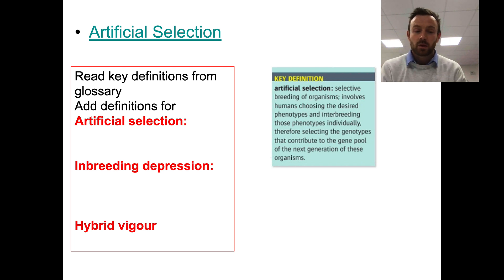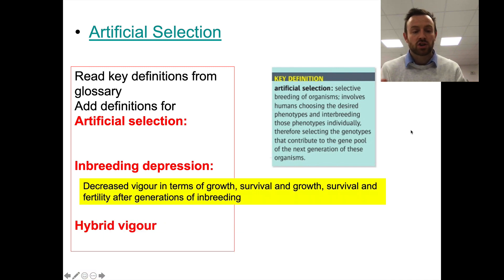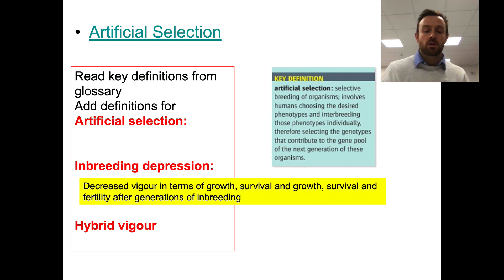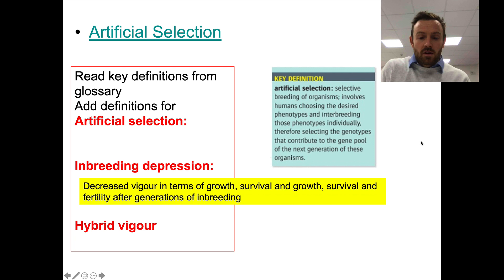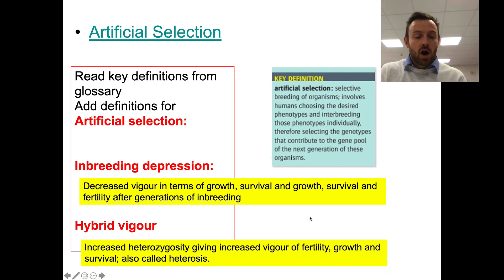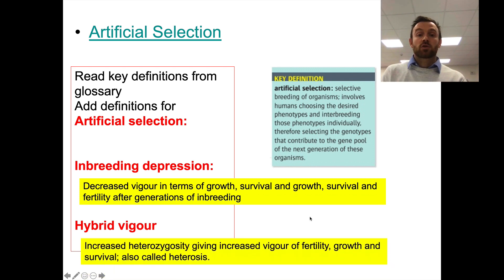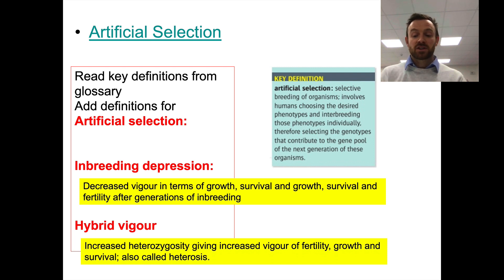With artificial selection there are some things that happen which are sort of negative. We have inbreeding depression, which is a decreased vigor in terms of growth, survival, and fertility after generations of inbreeding. Then we have hybrid vigor, which is increased heterozygosity giving increased vigor of fertility, growth, and survival. It's also called heterosis.